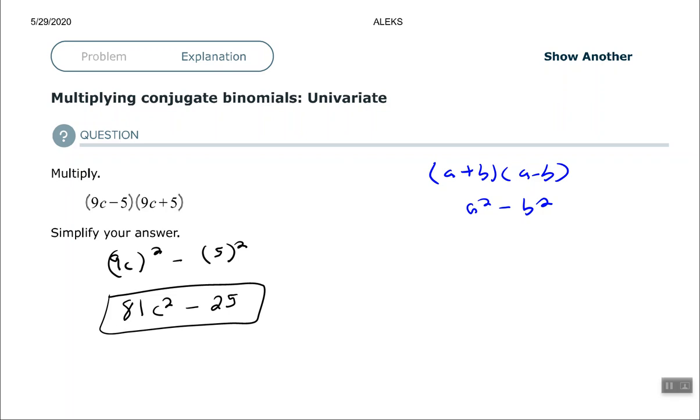Again, you can multiply them completely out by using your distributive property. But it's great to learn that little formula there that says when we're multiplying conjugates, the result is the first term squared minus the second term squared. All righty, good people. Hope you found this video to be helpful. Thank you.